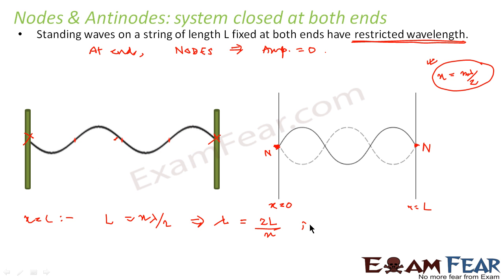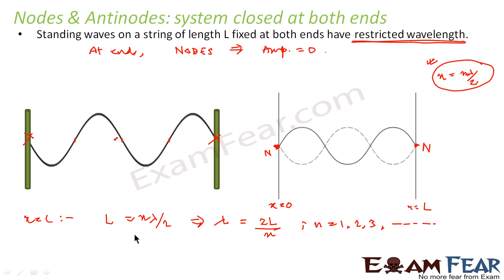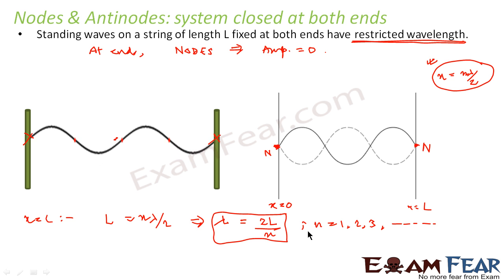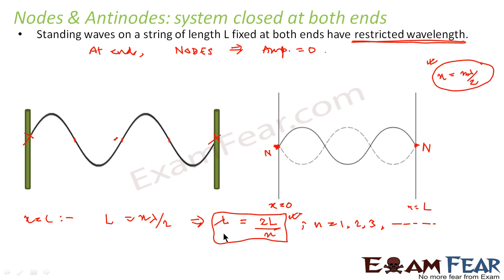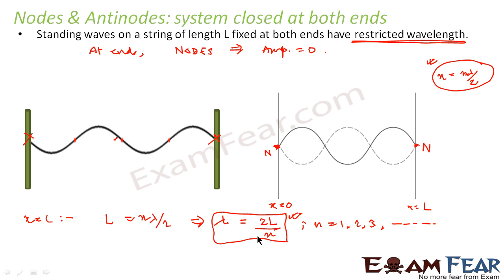Now what is n here? n is any natural number which can take any value from 1, 2, 3, and so on. So you can see that λ cannot take just any value — it can only take values which satisfy this condition. That is why it is said that standing waves on a string fixed at both ends have restricted wavelengths. Since wavelengths are restricted, frequency will also be restricted, because wavelength and frequency are very closely related to each other.